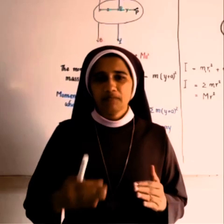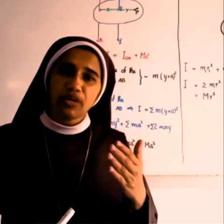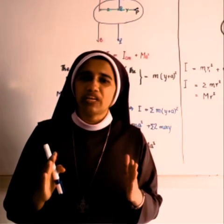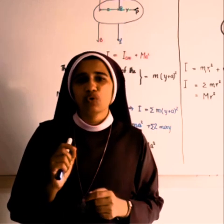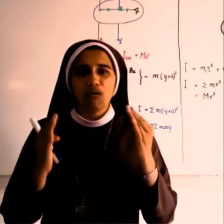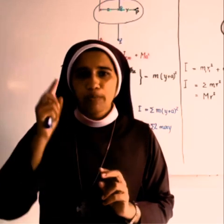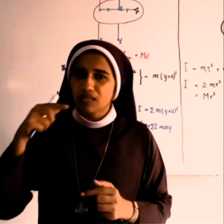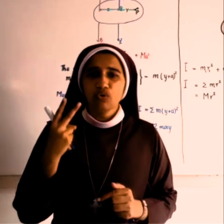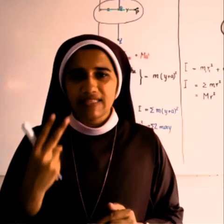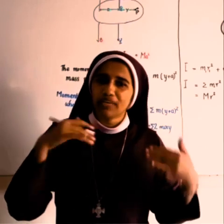The parallel axis theorem gives us a new way to find the moment of inertia based on any axis. To use it, we need to know two things: the total mass of the body M, and the moment of inertia of the body about an axis passing through its center of gravity, Icm. If we know both, we can find the moment of inertia about any parallel axis.